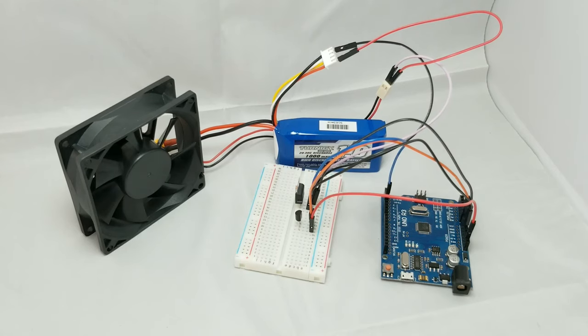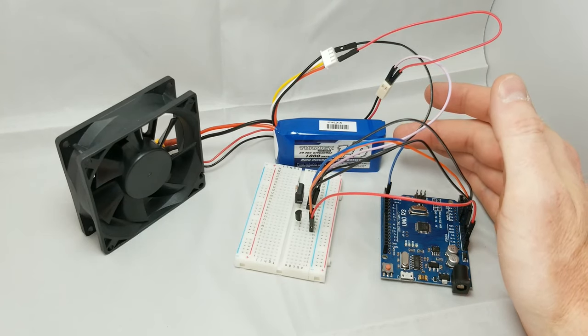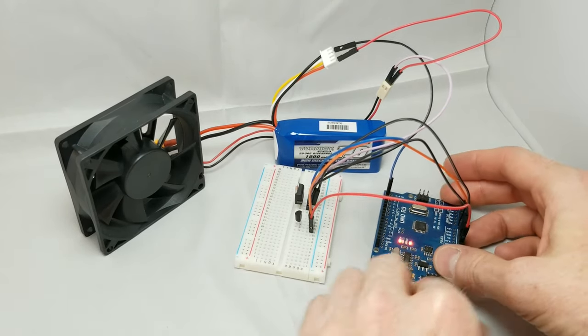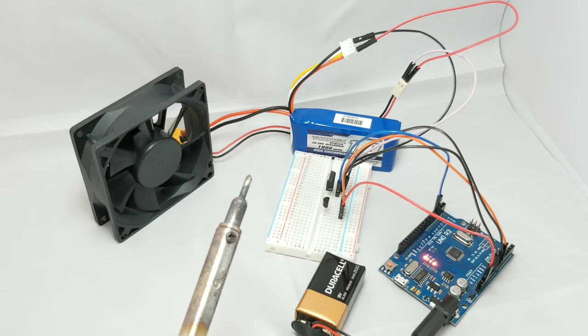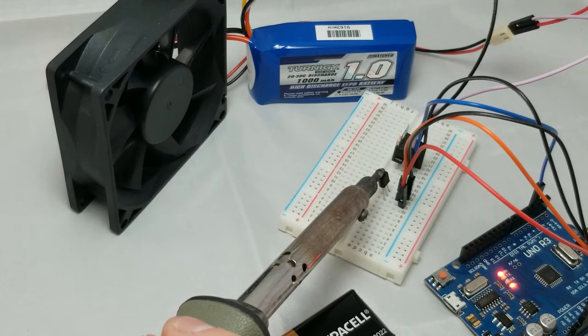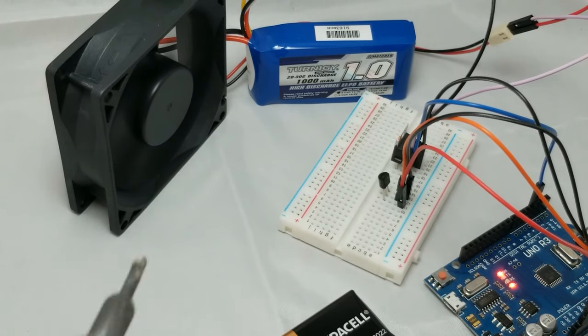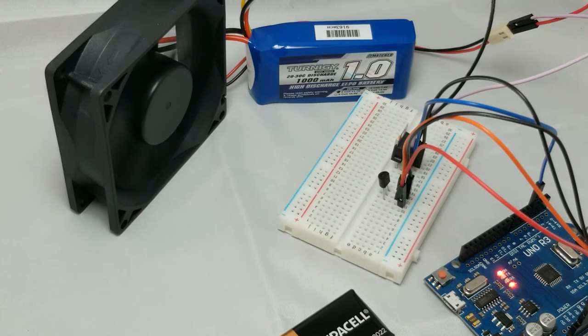All right, so everything's hooked up per the schematic. I've got a 3S battery recently charged to 12.6 volts connected to the fan through the MOSFET, and I'll be powering the Arduino Uno with a 9-volt battery. I'll warm up the temperature sensor using the soldering iron, and see if the fan turns on like it's supposed to. All right, the fan came on, and I'm back off.